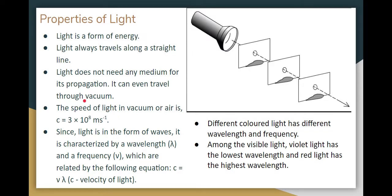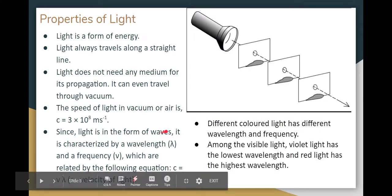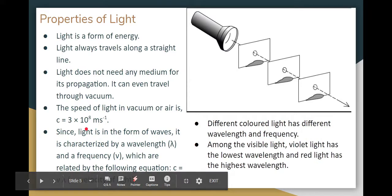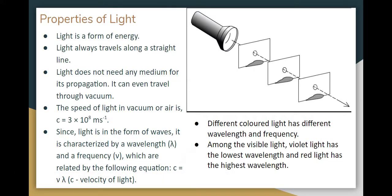Light travels through a vacuum at a speed of 3 × 10⁸ meters per second. Light travels in the form of waves, and the wave equation is: C = λ × ν, where λ is wavelength and ν is frequency.